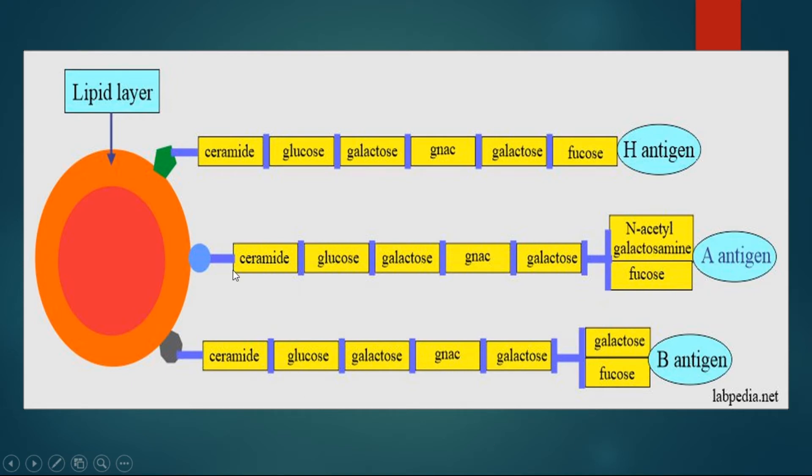This fucosyltransferase gene is independent of ABO blood grouping system. The gene encoding this fucosyltransferase is genetically independent of ABO. Fucosyltransferase is on chromosome 19 and ABO is on chromosome 9. This means ABO and H are therefore separate blood group systems.